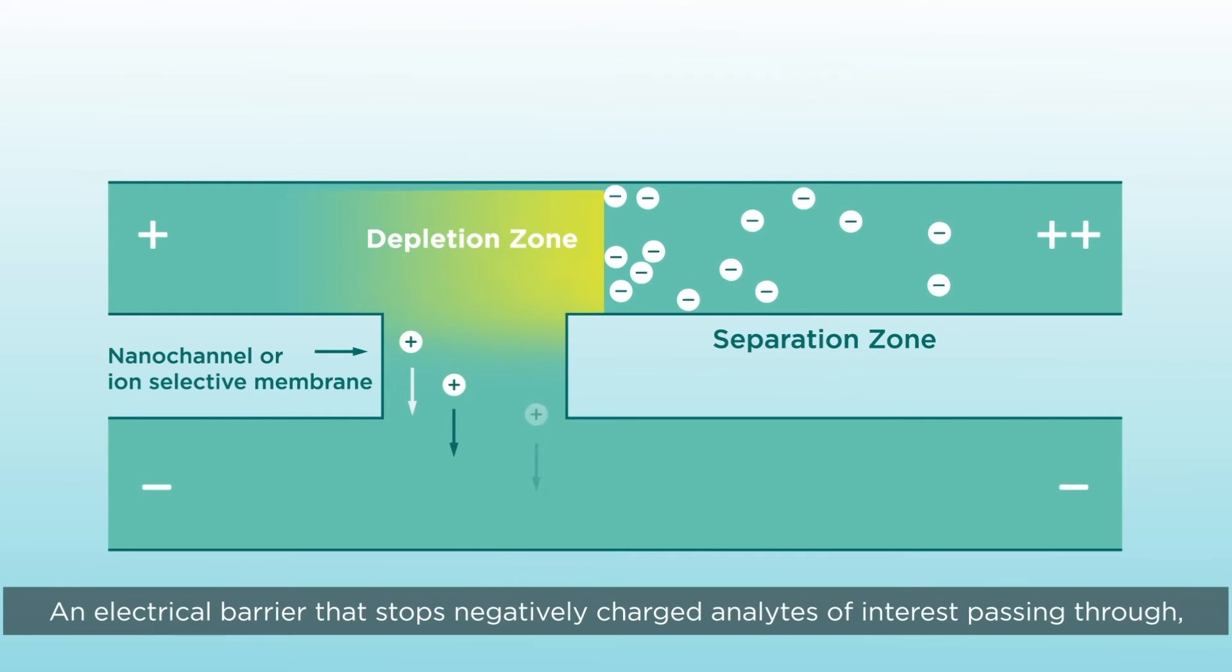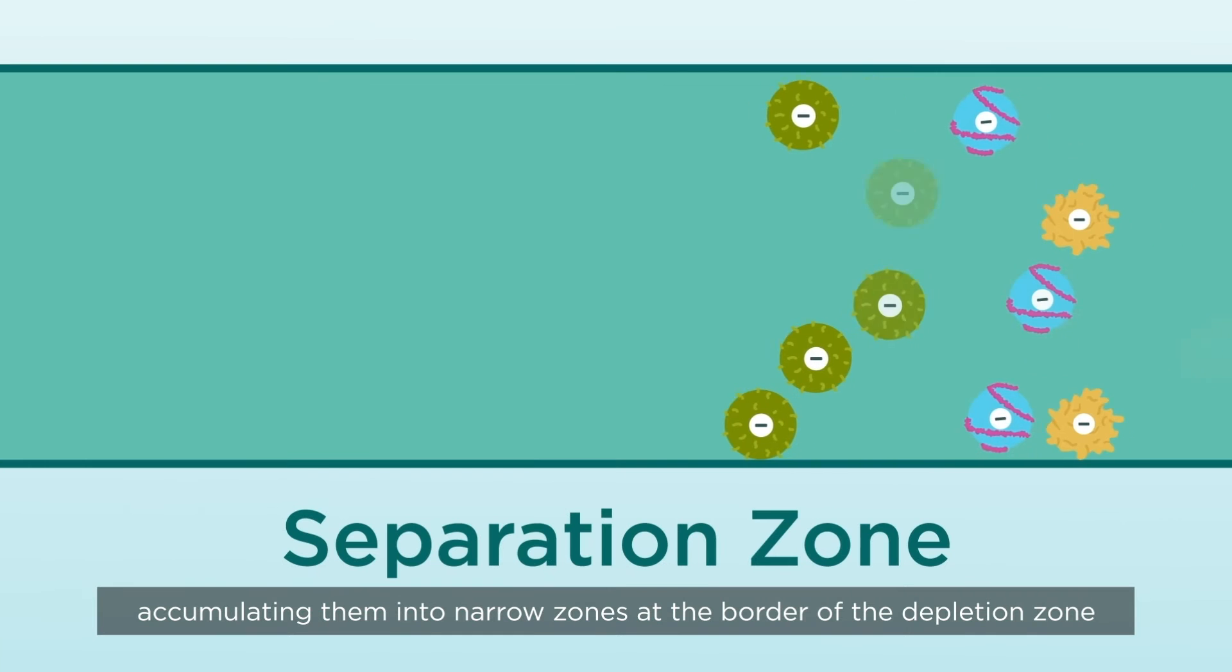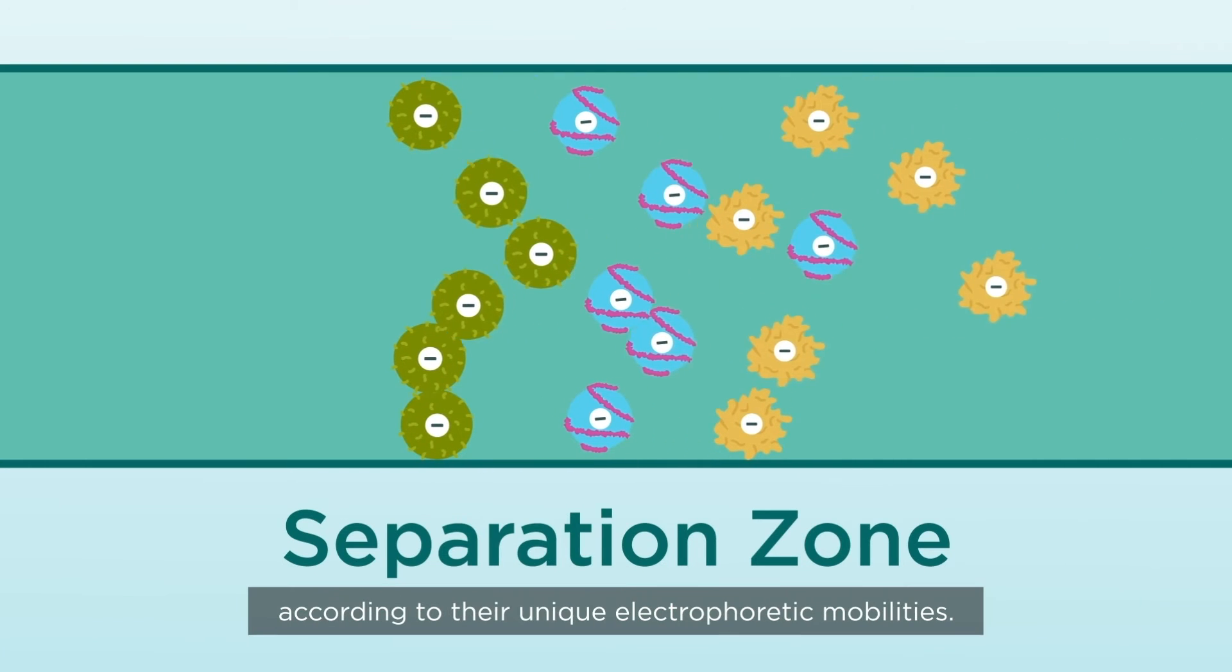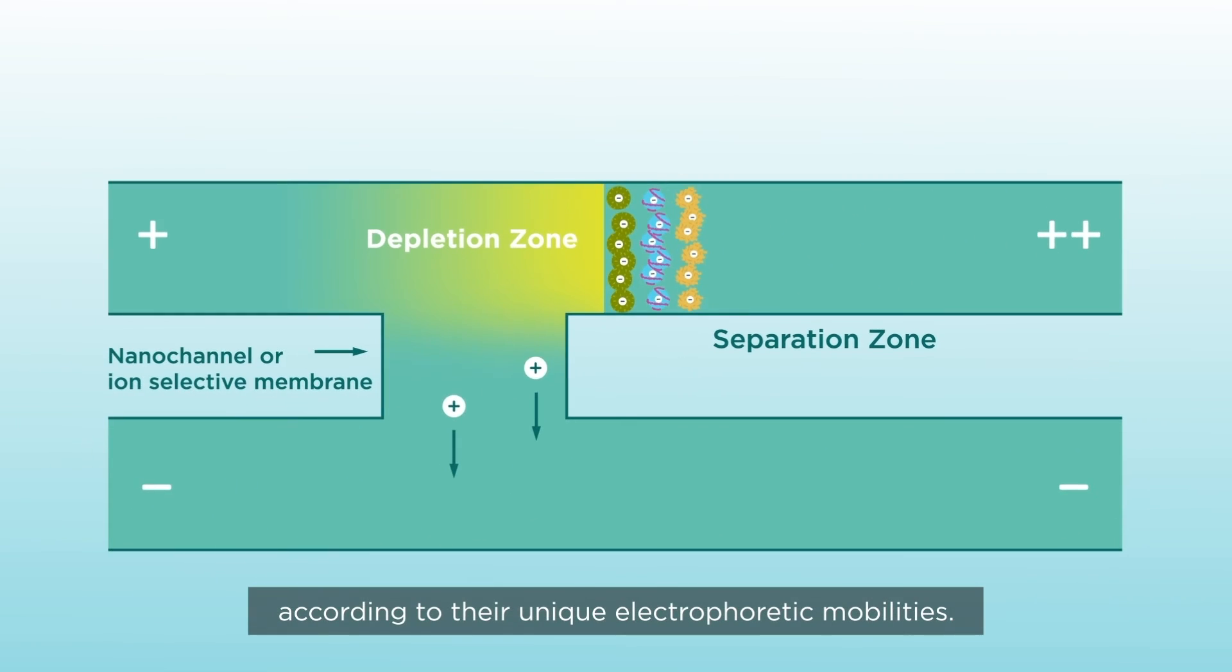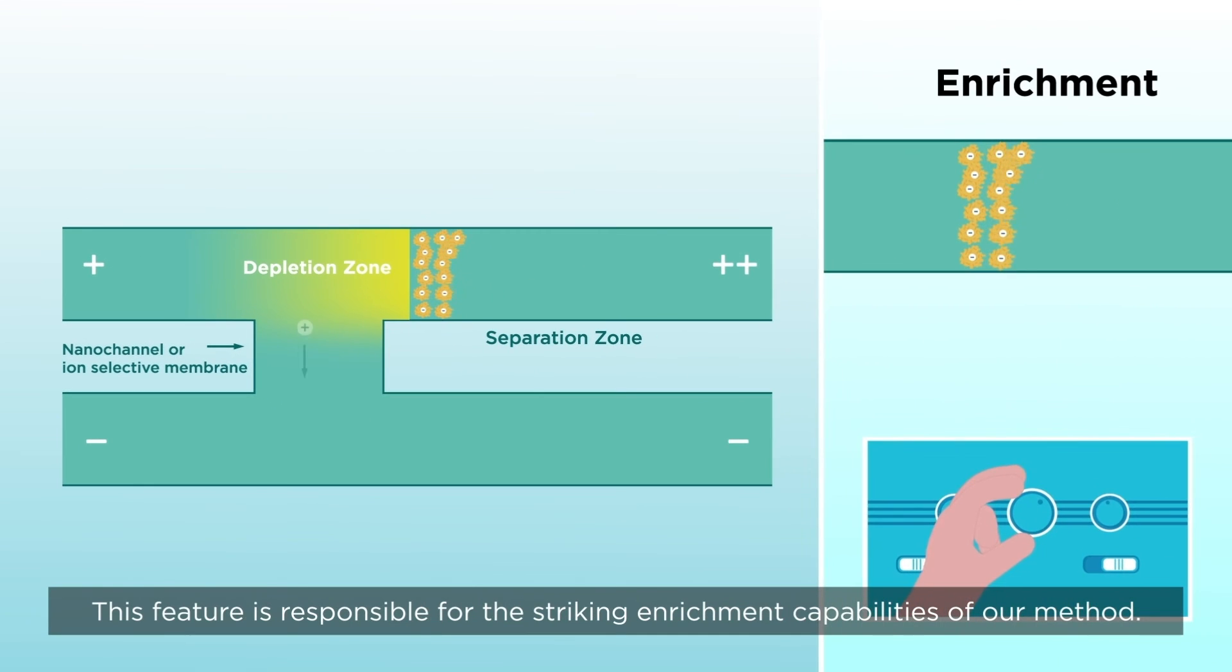The result? An electrical barrier that stops negatively charged analytes of interest passing through, accumulating them in narrow zones at the border of the depletion zone, according to their unique electrophoretic mobilities. This feature is responsible for the striking enrichment capabilities of our method.